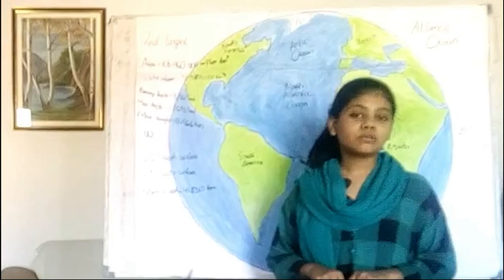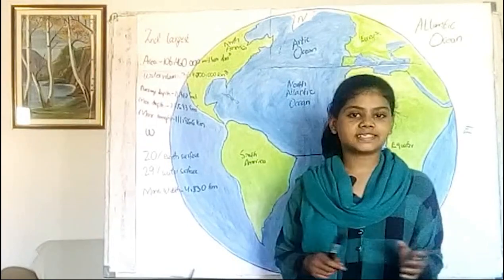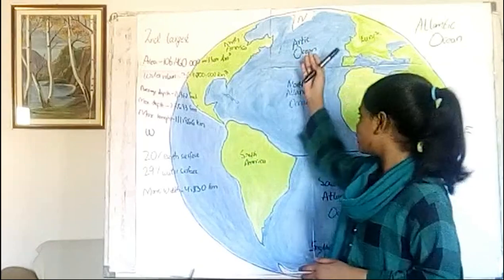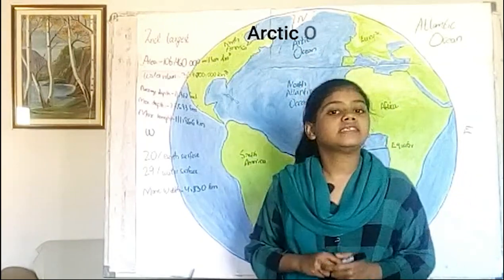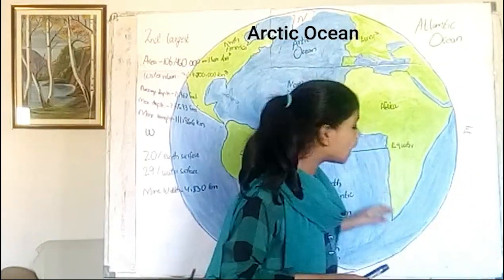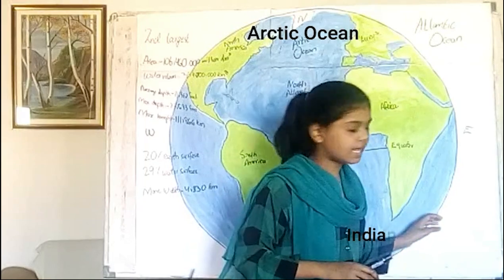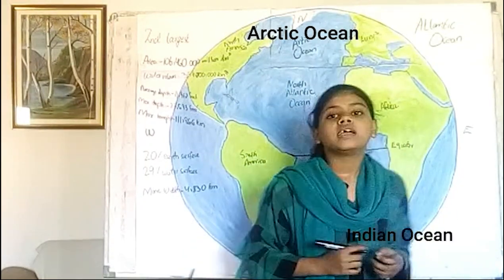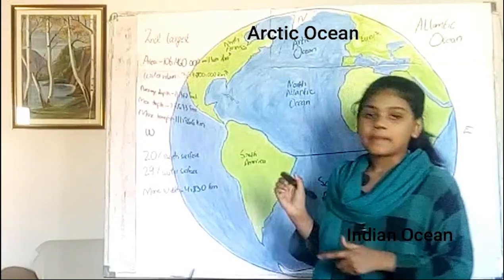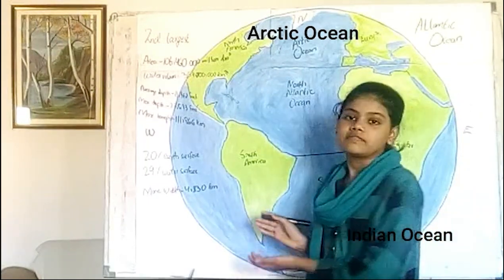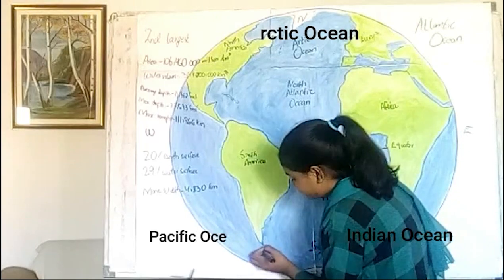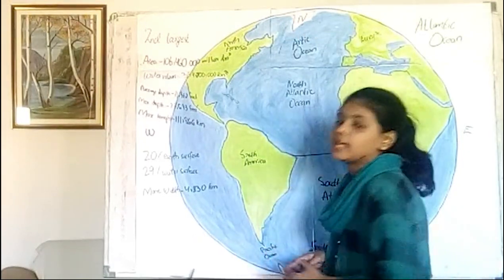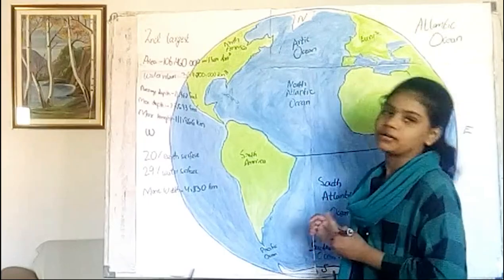The Atlantic Ocean is connected with all the other oceans. It is connected to the Arctic Ocean from the north, the Indian Ocean from the south east side, and the Pacific Ocean from the south west side.